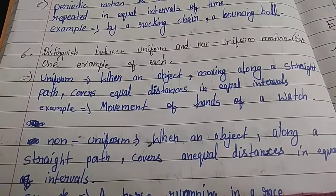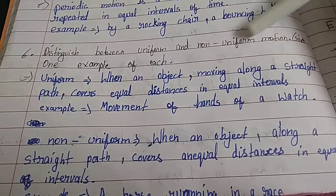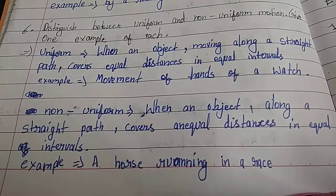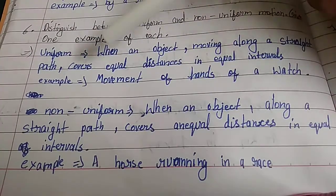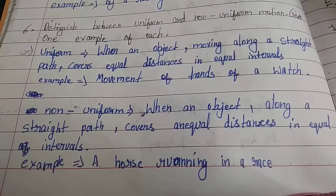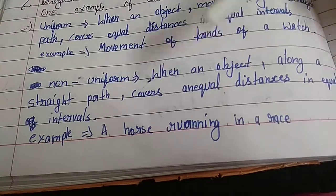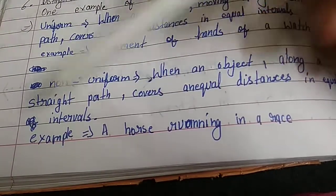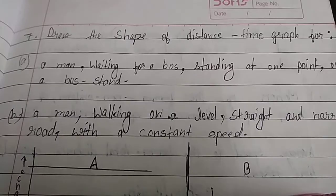Sixth question: Distinguish between uniform motion and non-uniform motion. Give one example of each. Uniform motion: When an object moves along a straight path, covering equal distance in equal intervals of time. Example: movement of hand of a watch. Non-uniform motion: When an object along a straight path covers unequal distance in equal intervals of time. Example: a horse running in a race.